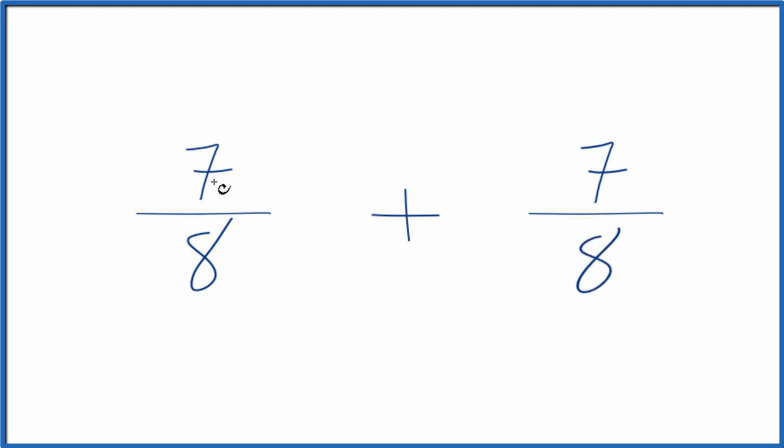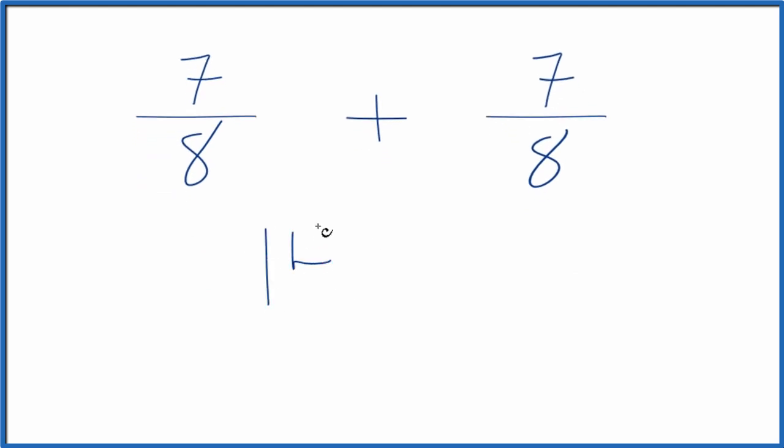So we could say 7 plus 7, that gives us 14, and then we keep the 8 the same. So 7 eighths plus 7 eighths does equal 14 eighths.